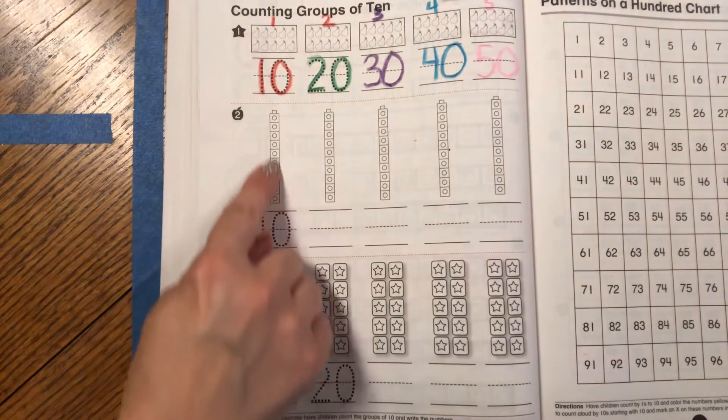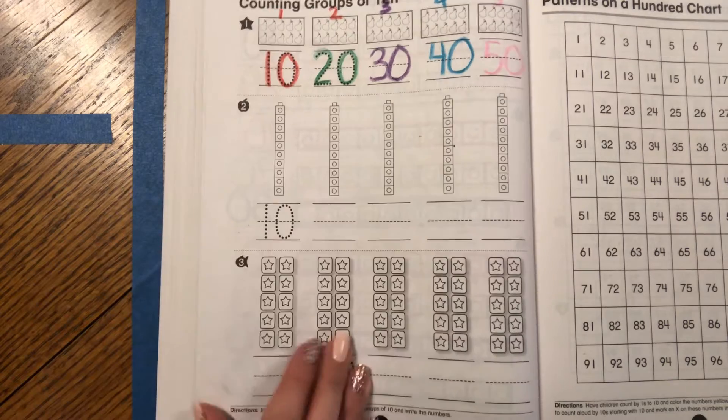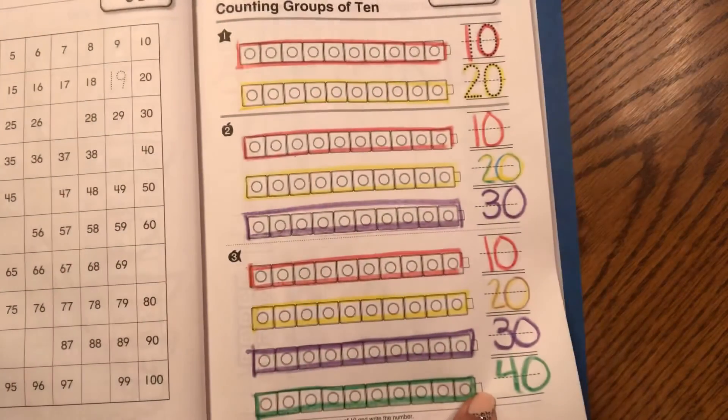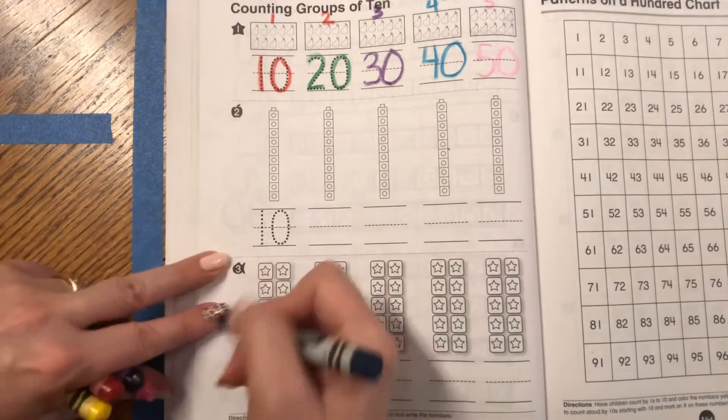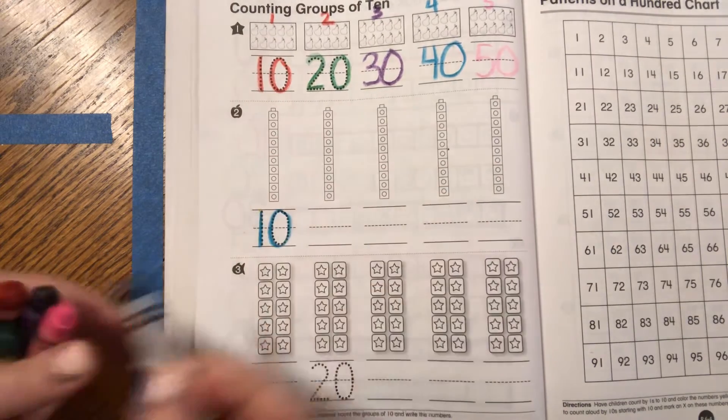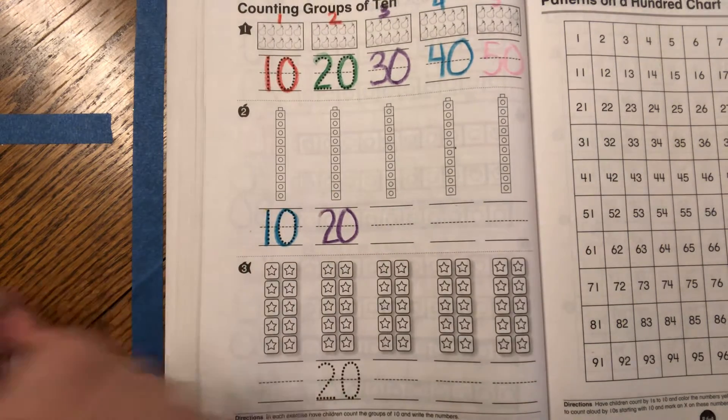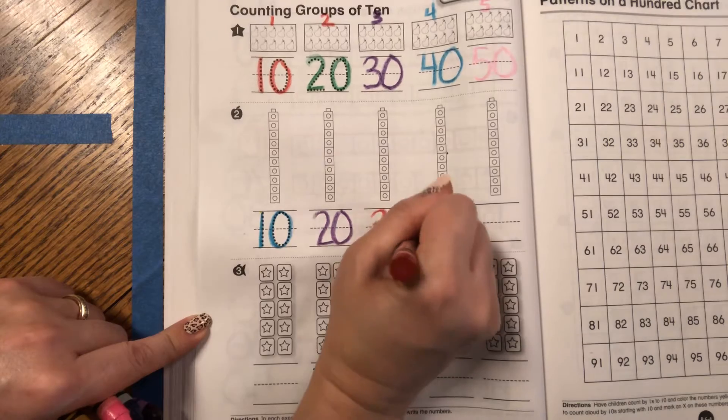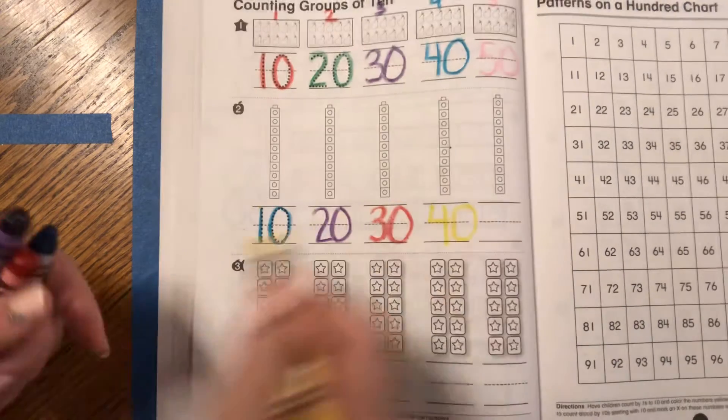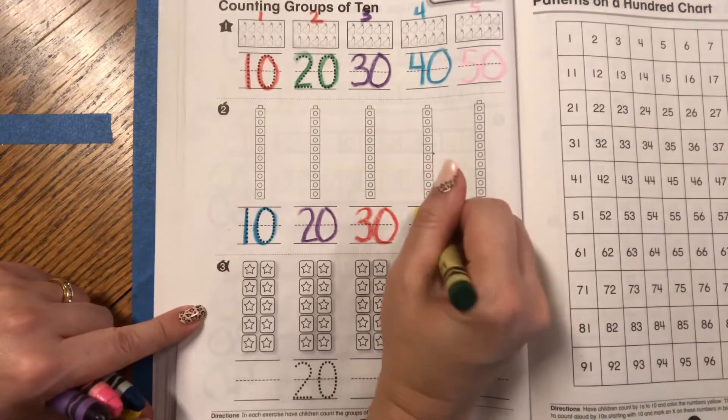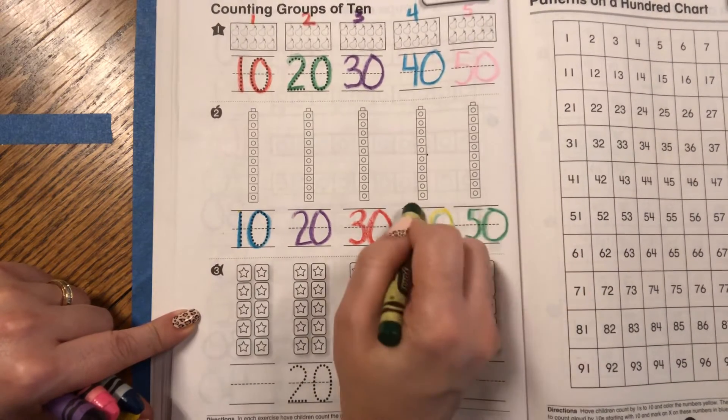We can also do that with 10s cubes. We know there's 10 in this row. We've seen them lying down, but it's still the same when they're standing up. So let's count by 10s. All right. 10, one 10, 20, two 10s, 30, three 10s, 40, four 10s, and 50, five 10s.